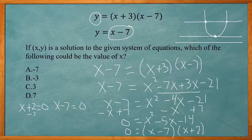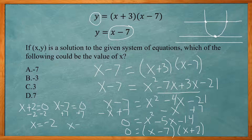Solving those: subtract 2 from both sides of x + 2 = 0 to get x = −2, and add 7 to both sides of x − 7 = 0 to get x = 7. So we have x = −2 or x = 7. Based on the answer choices, the answer is positive 7.